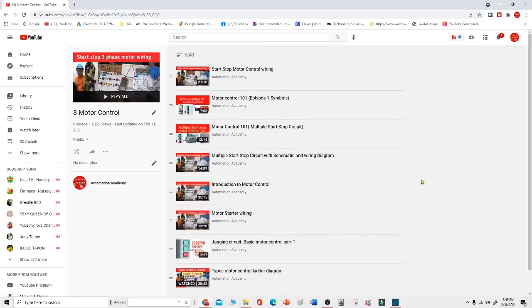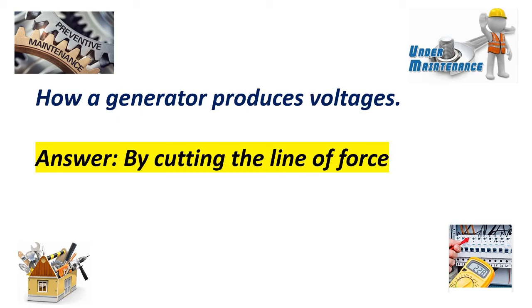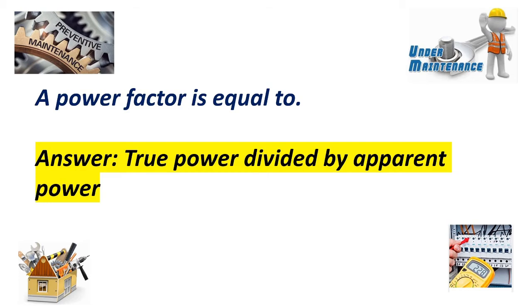Now let's proceed to interview questions and answers for electrical. Question number one: A capacitor performs in the circuit? Answer: Opposes any changes in voltage. How does a generator produce voltage? Answer: By cutting the line of force. A power factor is equal to? Answer: True power divided by apparent power.